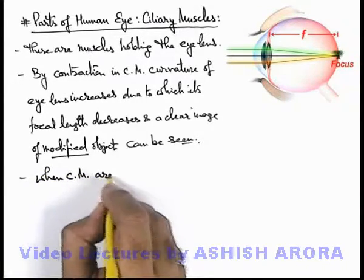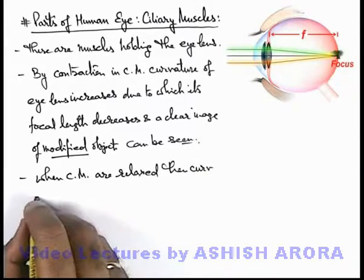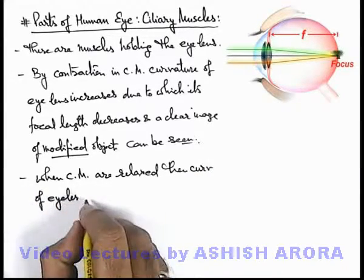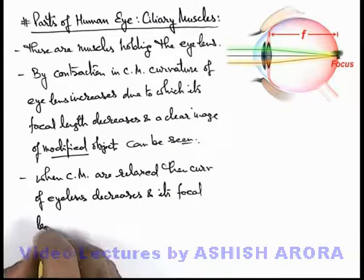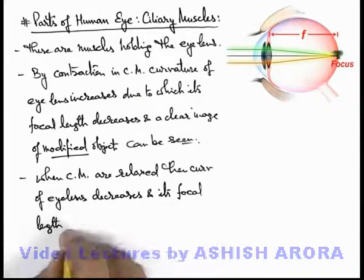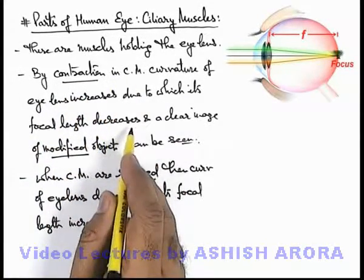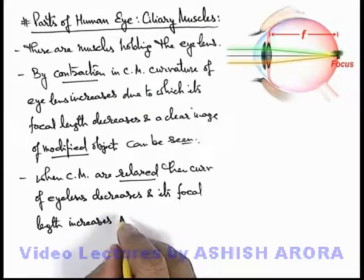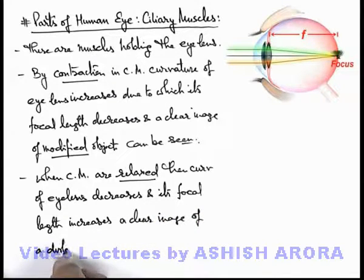Once ciliary muscles are relaxed, the curvature of the eye lens decreases, and its focal length increases. Focal length is the distance from the eye lens where it converges all parallel light falling on it. So always remember: in the relaxed state of the ciliary muscle focal length is large, and in the contracted state focal length is less. As focal length increases, a clear image of a distant object can be seen.